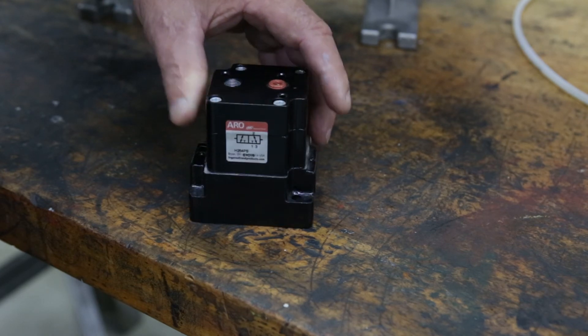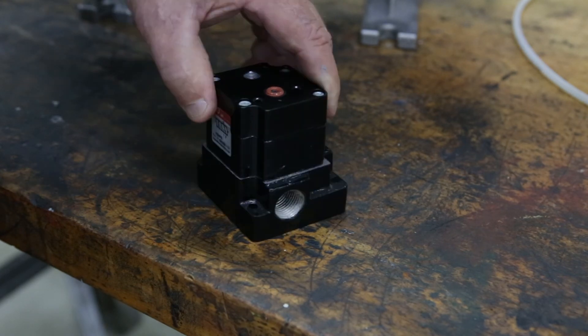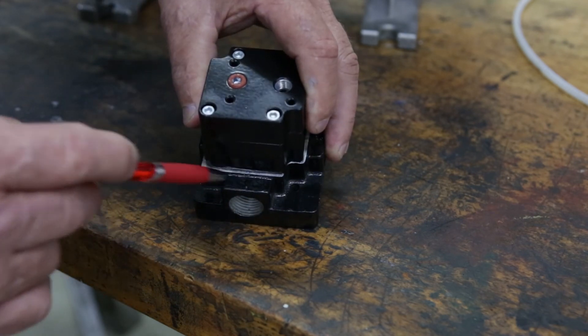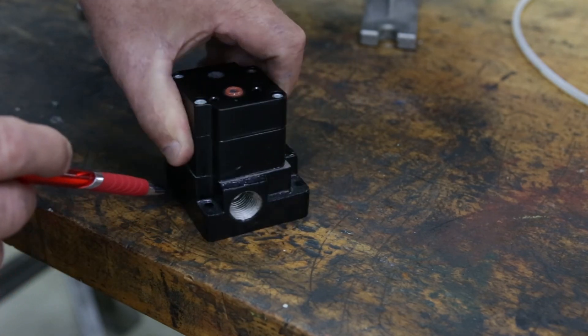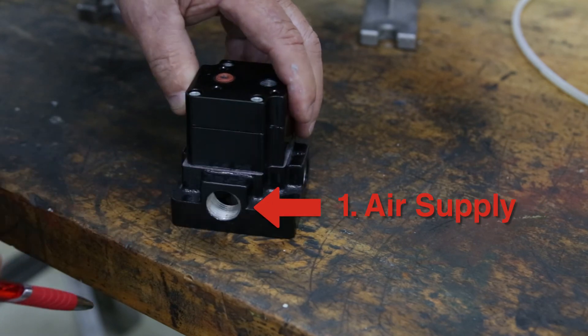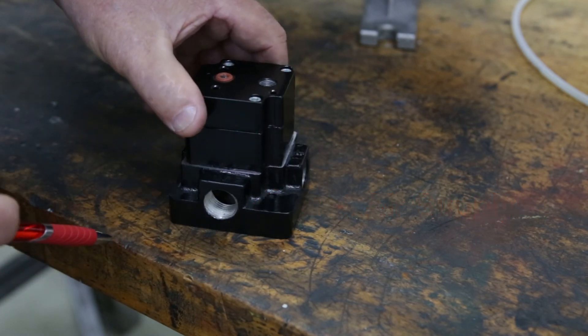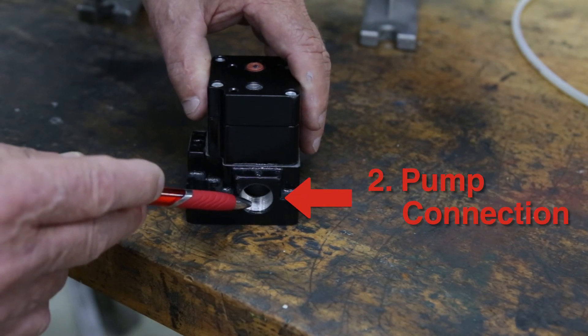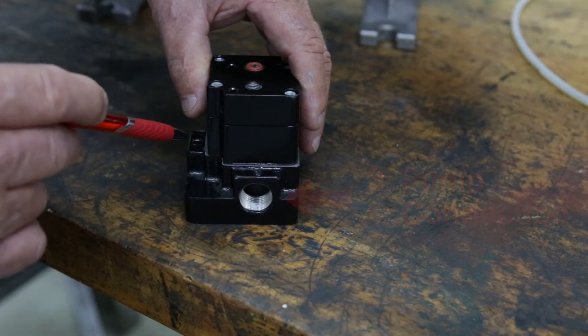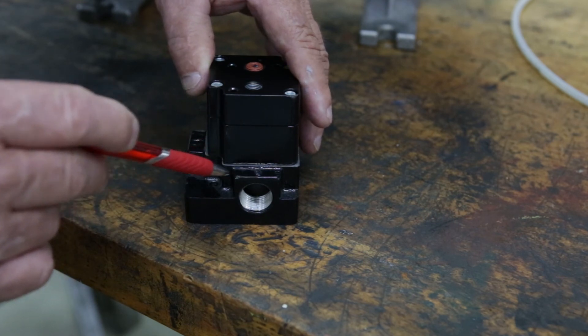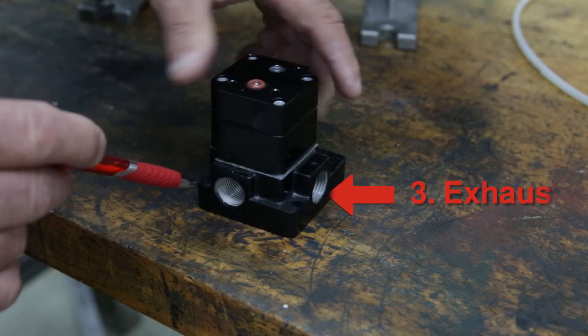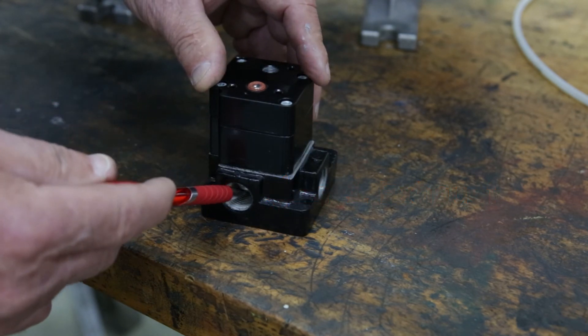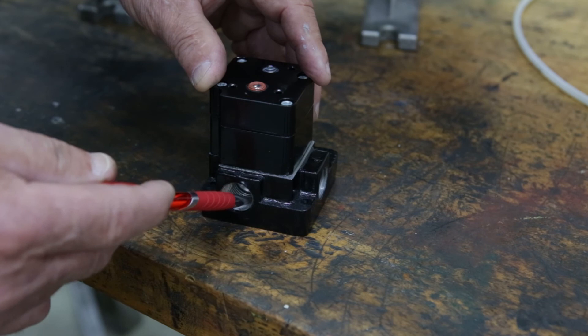This is an H-series ARO valve. It's a pilot-operated, normally closed, three-way valve. You'll notice on the body itself, there are numbers corresponding to each port. Port one is always air supply. Port two is connected to the pump itself, so when the valve is on, air will flow from port one to port two. And port three is exhaust. When this valve is turned off, we're going to exhaust all the air from the motor and the pilot through this port.